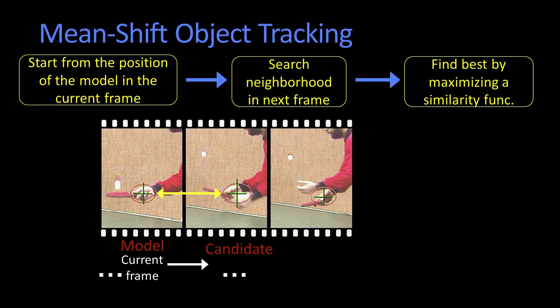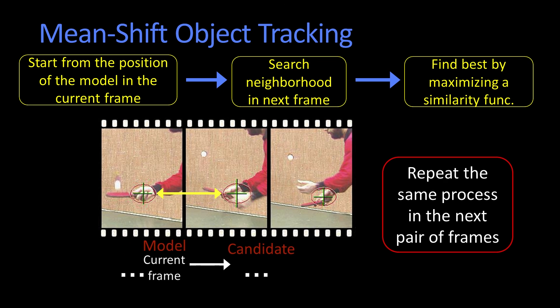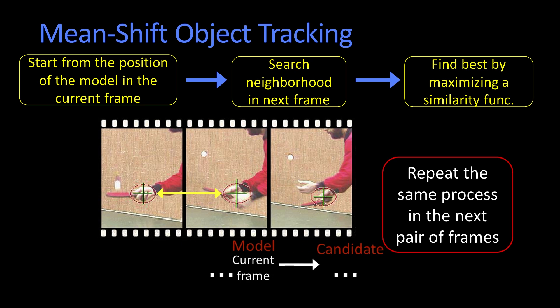What we want to do is find the new location, maybe scale, maybe some other change like an orientation thing, that maximizes some similarity function. And then we just iterate — we connect the dots. We repeat the process and we get this beautiful animation where the new maximum becomes the start for the next frame.